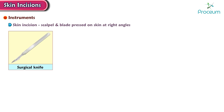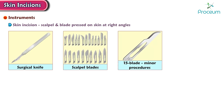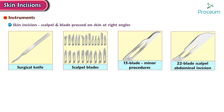Instruments for surgical incisions: a skin incision is made with the scalpel, with the blade pressed on the skin at right angles. Scalpel blades vary in size and shape. The number 15 blade is used for minor procedures, and a number 22 blade scalpel is ideal for an abdominal incision. That's all for the video; we'll see you next time.